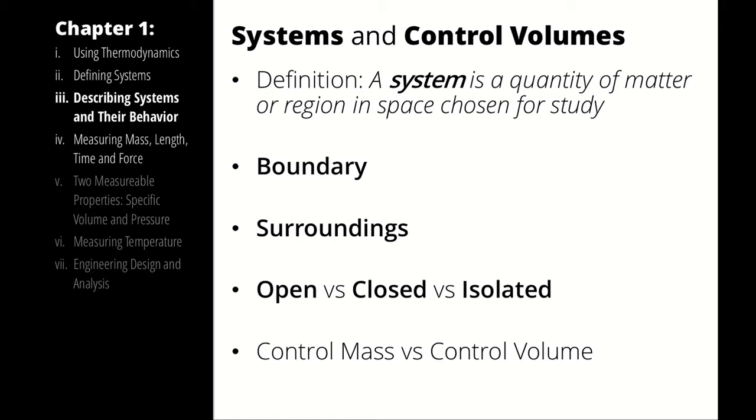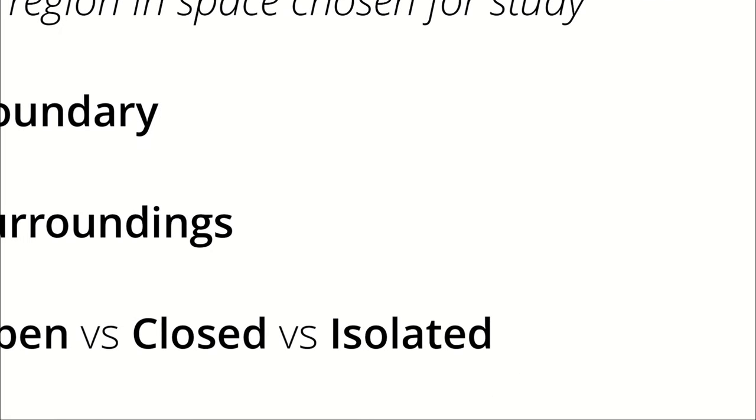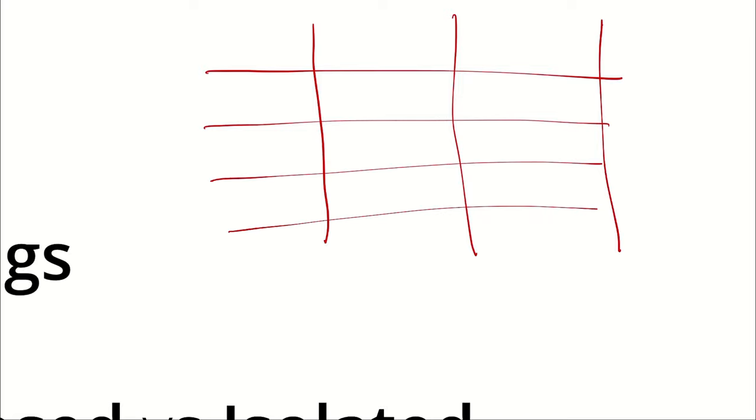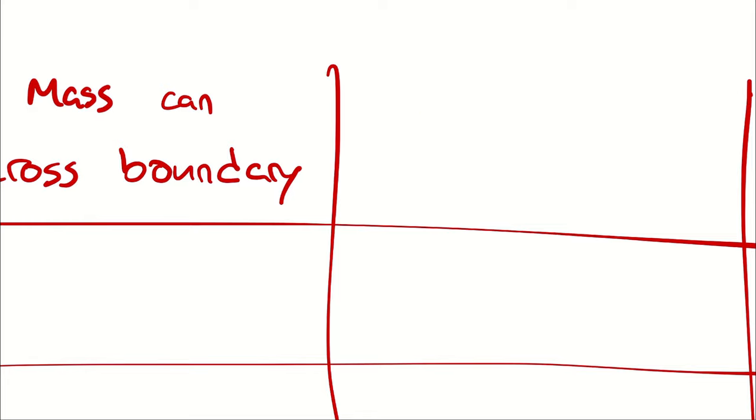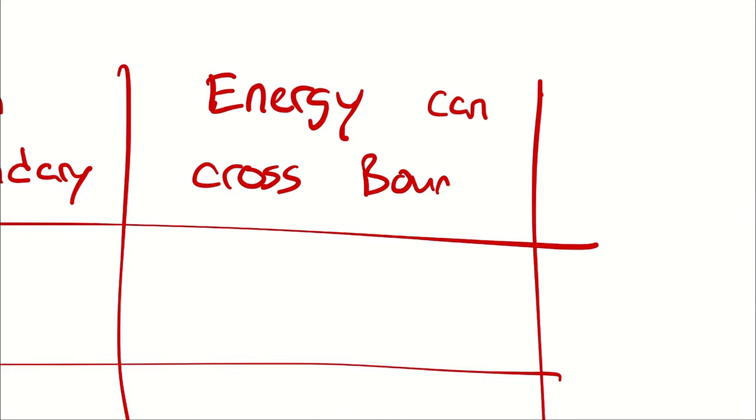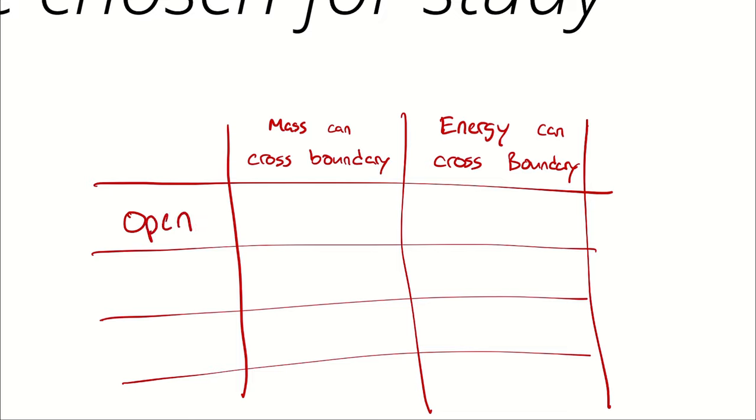When we describe control masses and control volumes, what we are also doing is trying to limit our scope. And one way of doing that is by defining our system as being open or closed or isolated. That refers to whether or not we are considering the effects of mass and energy crossing the boundary. In an open system, both mass and energy can cross the system boundary. In a closed system, mass cannot cross the system boundary, but energy can. In an isolated system, neither mass nor energy can cross the system boundary.